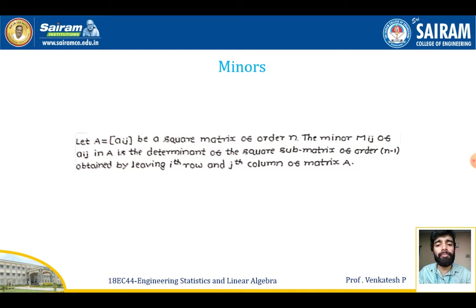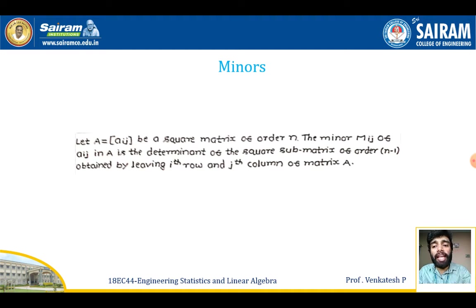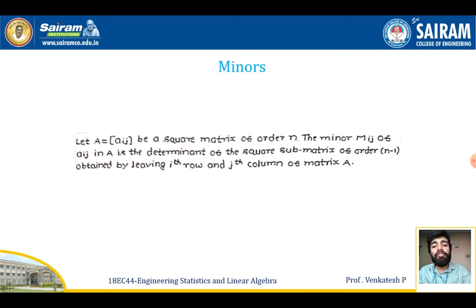Let A = [a_ij] be a square matrix of order n, an n×n matrix. The minor M_ij of the entry a_ij in the matrix A is the determinant of a square sub-matrix of order n−1, obtained by leaving the i-th row and j-th column of the matrix A.